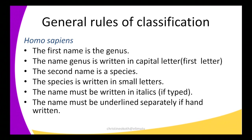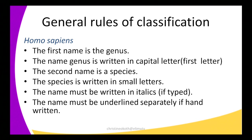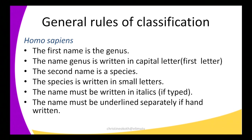Then the second name is a species. Looking at our example, sapiens is the species. The species name is written entirely in small letters — all the letters in sapiens are written in small letters. Another rule: the name must be written in italics if typed. As in our example, it is written in italics. The last rule: the name must be underlined separately if handwritten — you underline the name Homo separately and the name sapiens separately.